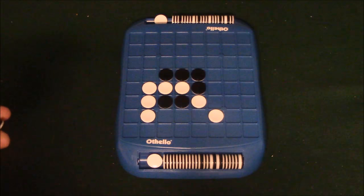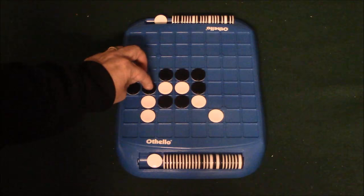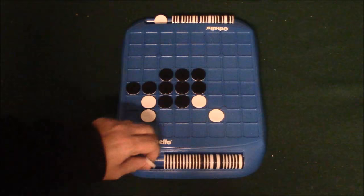And I'll do one more move for black. Black has a couple of moves he can do. He can play here or here. And both will turn over three chips. So I'll go ahead and play here and turn over these three. One, two, and three.